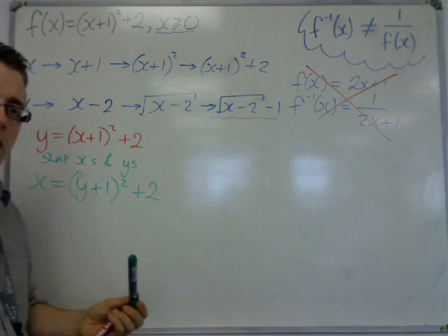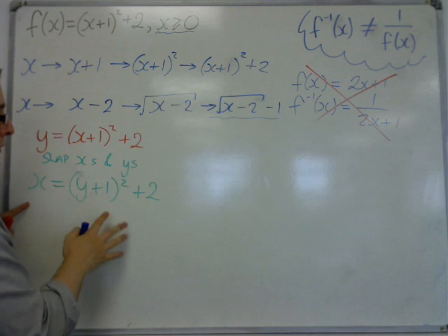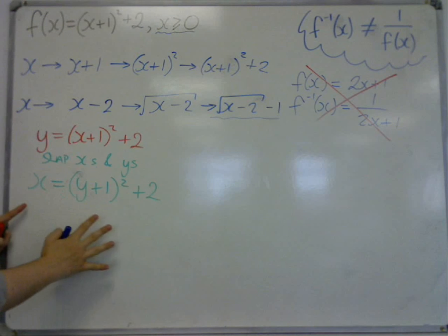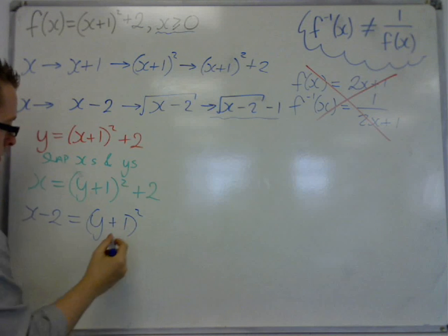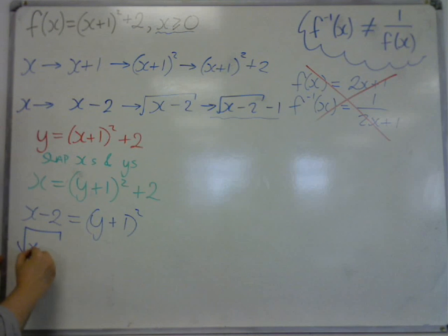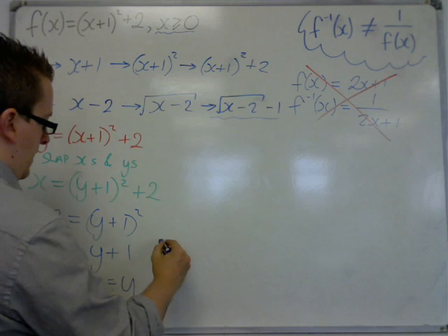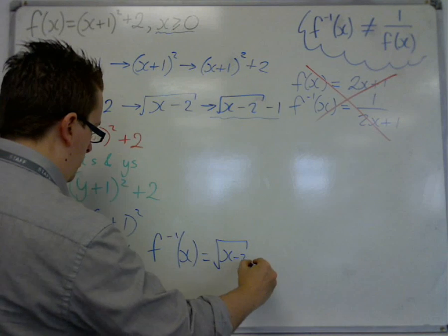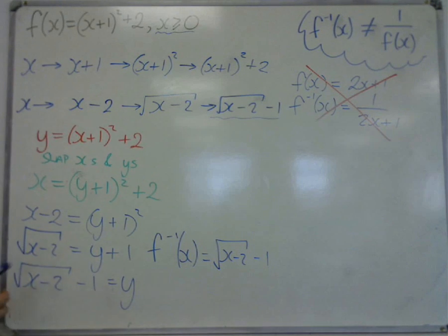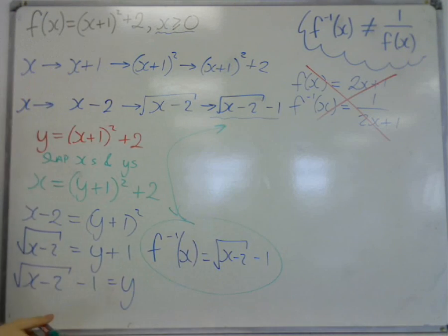So the y can become x, the x can become y. And then what we want to do is we want to get this in terms of y, make y the subject. So we take 2 from both sides. We square root both sides. And then we take 1 from both sides. So it's then very clear that f to the minus 1 of x is root x minus 2, take away 1. Which is the same as what we got beforehand.